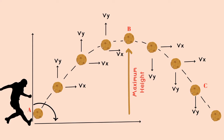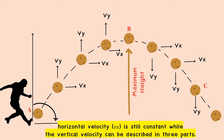Sepak Takraw is a sport activity that can be considered to involve projectile motion. In this figure, you can see Vy, which refers to the vertical motion, and Vx, which refers to the horizontal motion. The horizontal velocity Vx remains constant, while the vertical velocity Vy can be described in three parts.